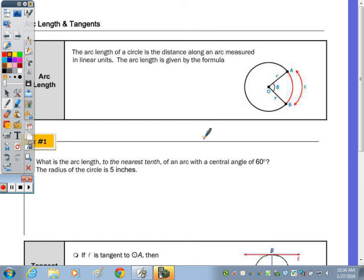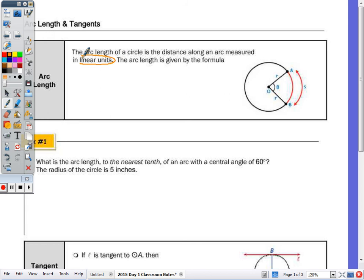In your reading, you read that a tangent line intersects a circle at only one point. The arc length of a circle is the distance along an arc measured in linear units - inches, feet, yards, meters, and so forth. In this picture, arc length AB is noted with the letter S.